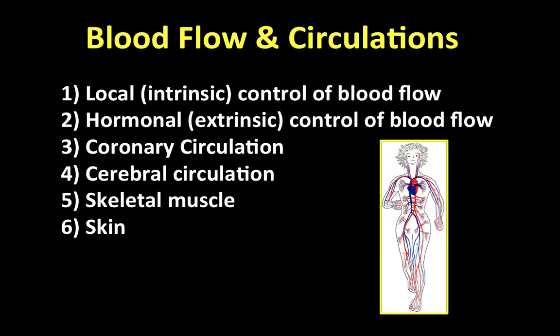A quick review: with the local intrinsic control of blood flow we talked about examples including auto-regulation, active hyperemia, and reactive hyperemia. We also talked about the mechanisms which explain local control of blood flow, including the myogenic hypothesis and the metabolic hypothesis.